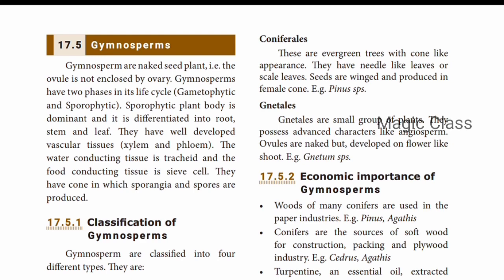Gymnosperms have 2 phases in their life cycle: the gametophytic and sporophytic phases. Unlike bryophytes and pteridophytes, the sporophytic plant body is dominant in gymnosperms. The plant body is differentiated into root, stem and leaf.